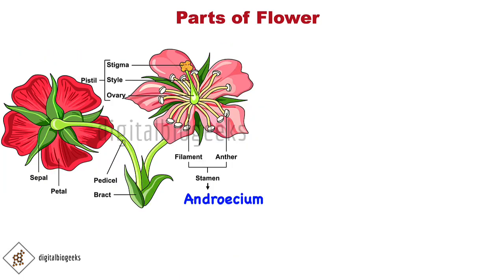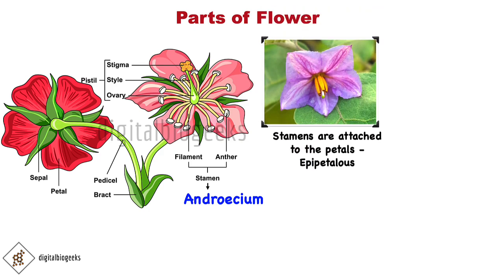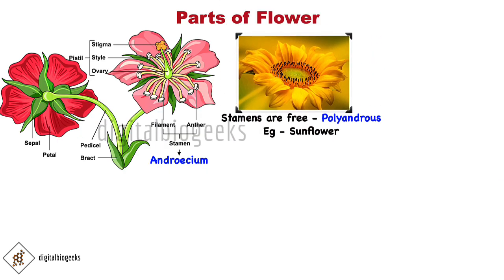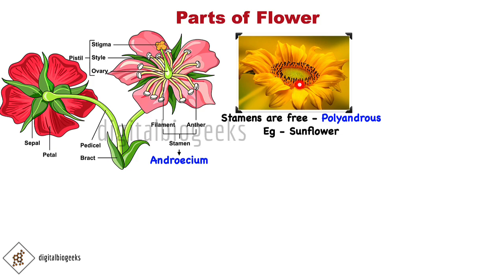When stamens are attached to the petals, they are known as epipetalous — we can observe this in brinjal. In lily, the stamens are attached to the perianth; when calyx and corolla are united it is called perianth, and stamens attached to the perianth are called epiphyllous. When stamens are free, we call it polyandrous — for example, sunflower.